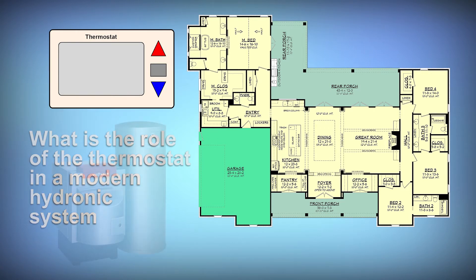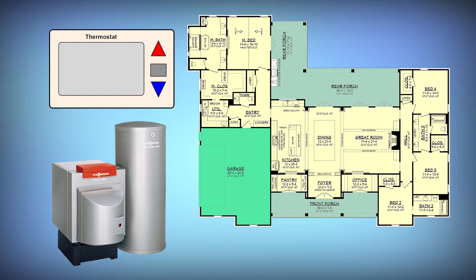Traditionally the thermostat was connected to the boiler to turn the burner on and off from a space temperature. The thermostat was located in some place central to the home and one temperature controlled whether the house got heat or not. This is not always the best way to manage our modern hydronic heating system.